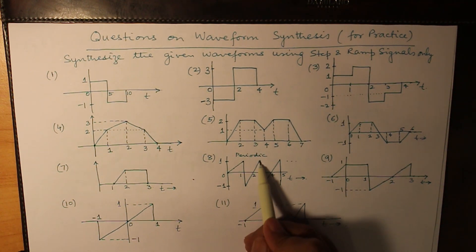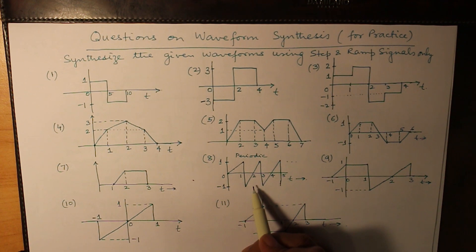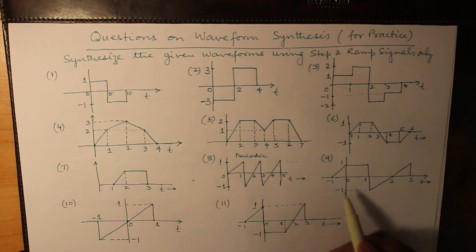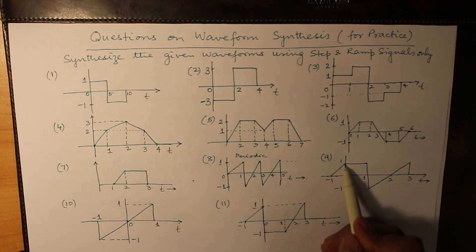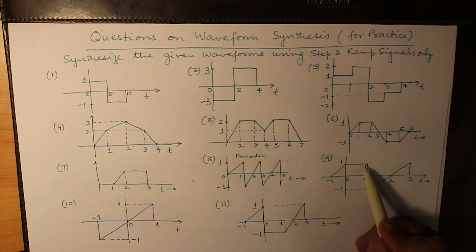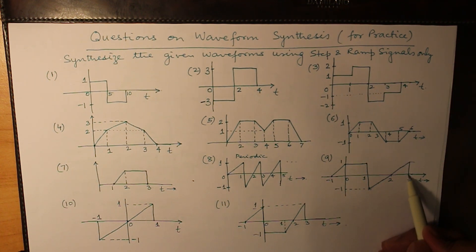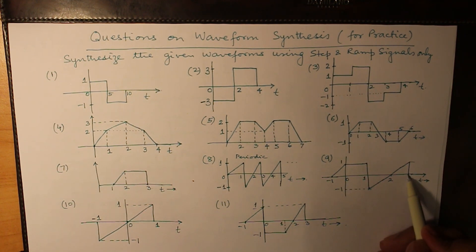Question 8 is a typical question that has appeared in IP University many times. For question 9, there is a ramp signal at t equals minus 1, another ramp signal at t equals 1, a sudden change in magnitude at t equals 1 (a step signal), then a ramp signal making the slope go from 0 to plus 1. At t equals 3, both the slope and the magnitude are changing simultaneously, so rule number 3 is applied where change of magnitude and change of slope happen at the same time.